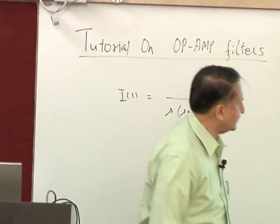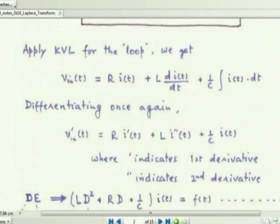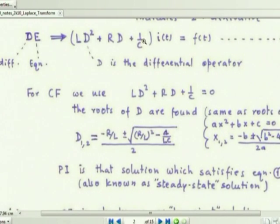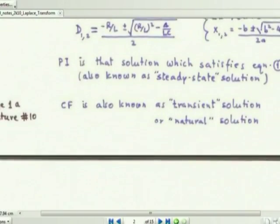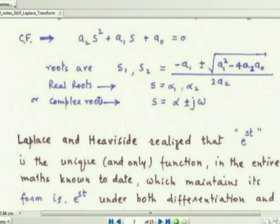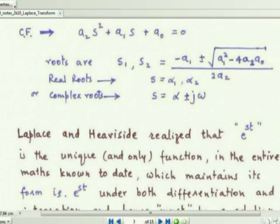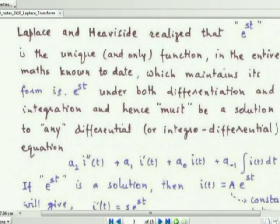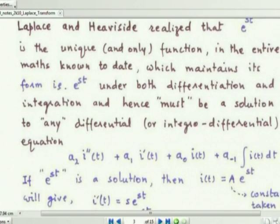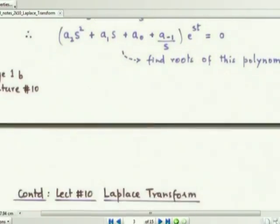We have this integral differential equation, and from the familiar first-year form with d/dt, we know how to find the roots. Using the complex variable, we substitute and get the formula in terms of S. The most interesting part is that Laplace and Heaviside realized that e^(st) is the unique function in all of mathematics — known at that time, about 150 years ago — that maintains its form under both differentiation and integration, and must therefore be a solution to any differential or integral equation.